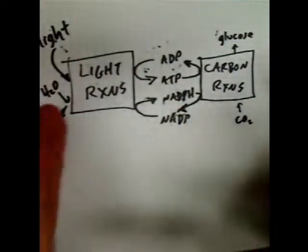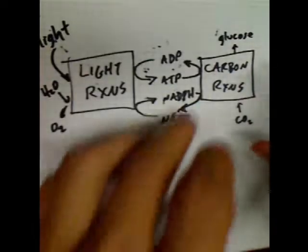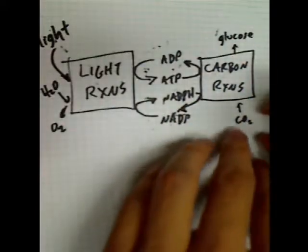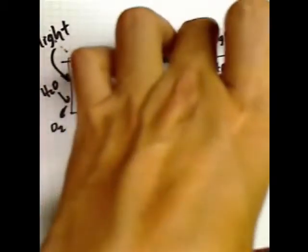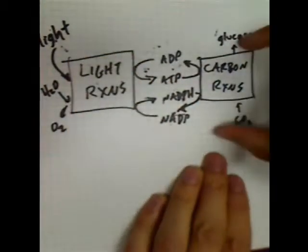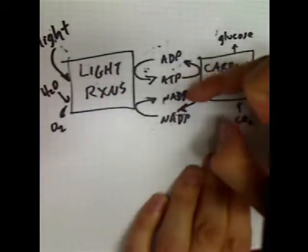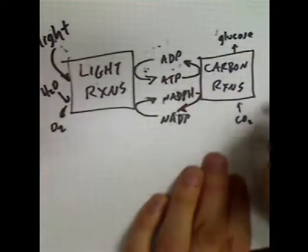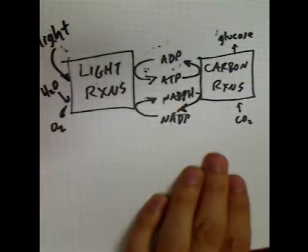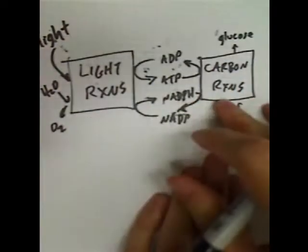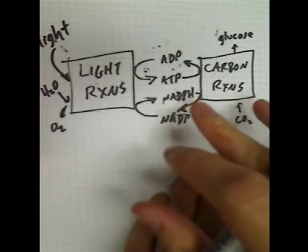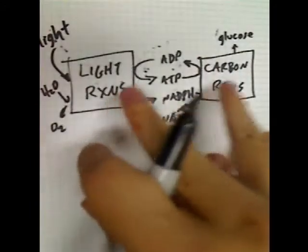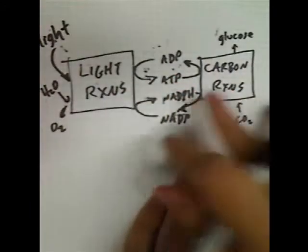Understand this medium-sized picture before moving on. The synthesis part of photosynthesis — the fixing of carbon and making of carbohydrates — is done by the carbon reactions, which are powered by the ATP and NADPH produced by the light reactions. The light reactions provide the energy that the carbon reactions need to do the work of photosynthesis. The light reactions and carbon reactions will be covered separately in separate videos, but first make sure you can reproduce this diagram and explain it.